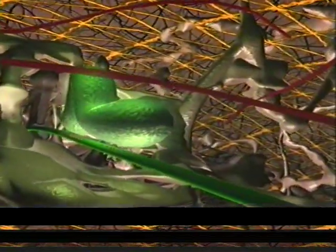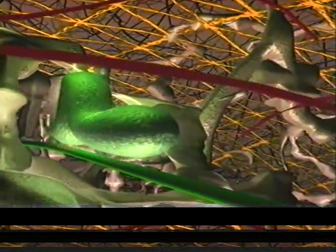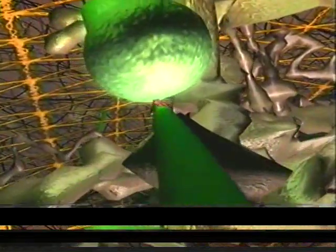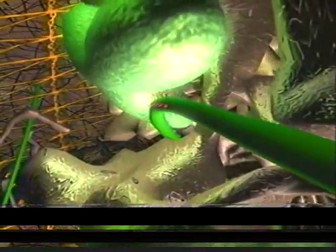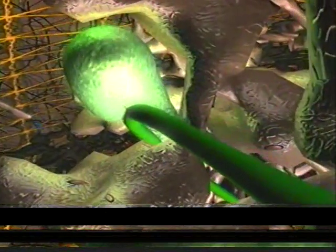Mitochondria are organelles that provide the energy the cell needs to operate its pumps, motors, and micromachines. This miniature power plant uses motor proteins to cruise along microtubules on its journey through the cell.